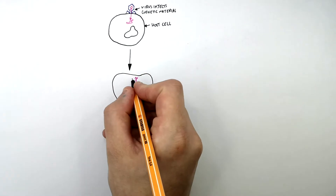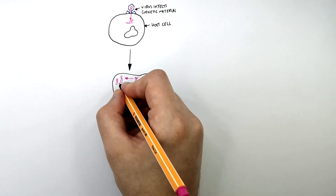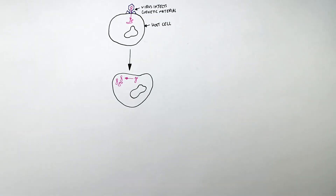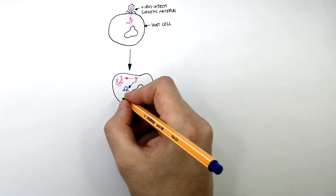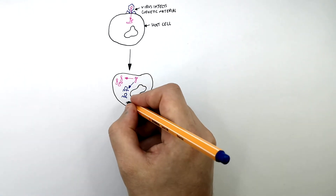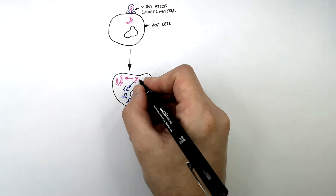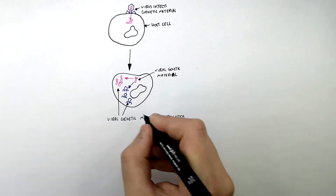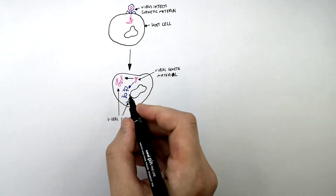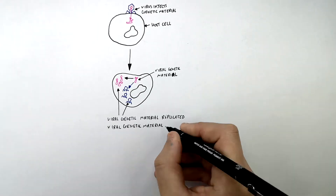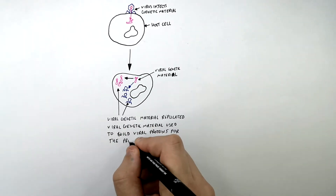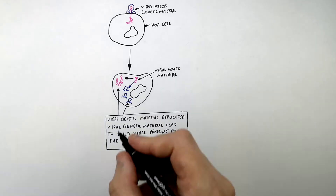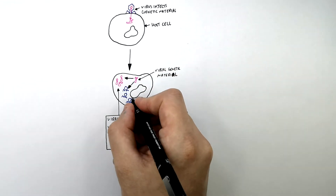The viral genetic material is replicated — copies of it are made inside the cell. The viral genetic material is then used to make proteins, which are used to build the protein coat of the virus.